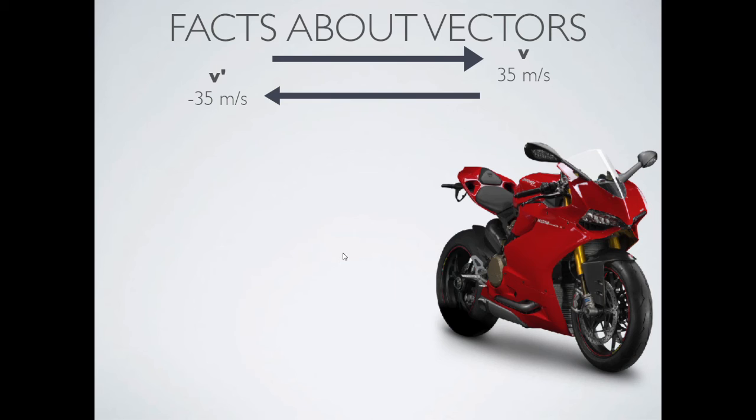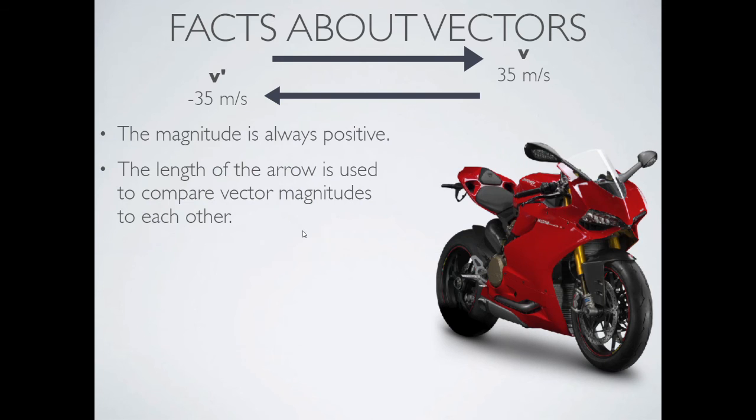So a couple more facts about vectors that I want to show you here. This beautiful bike, this is a nice little Ducati. So the magnitude of your vector is always positive. It's like the scalar portion of your vector. When I ask you for the magnitude of a vector, do not give me something negative.